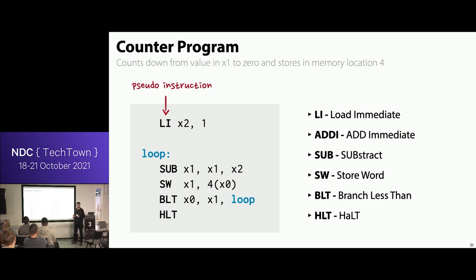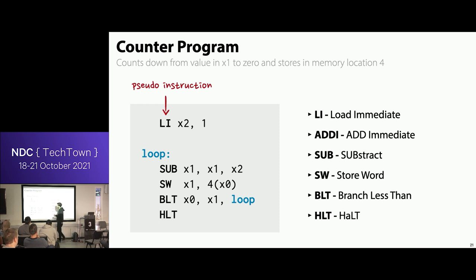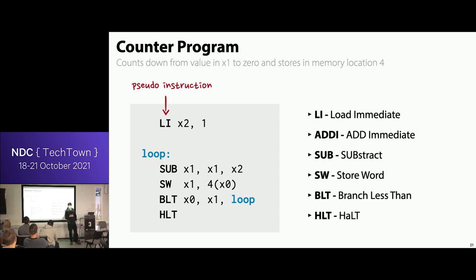RISC-V also has a number of pseudo-instructions. Because the instruction set is so compressed and small, they try to be clever — each instruction can be used in different ways, which can hurt readability. So pseudo-instructions translate into actual ISA instructions but convey better what they're for. For example, load immediate is actually what you intend with the ADDI that uses X0.